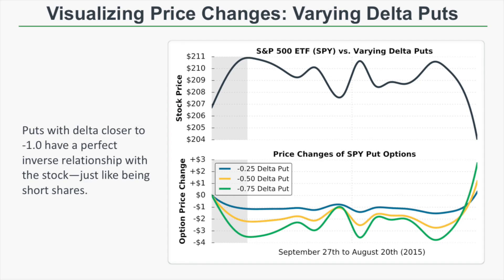Now let's look at the same time period with varying Delta put options — with initial Delta values of negative 0.75, negative 0.50, and negative 0.25. All of these puts have an inverse relationship with the stock price because they have negative deltas. The negative 0.75 Delta put is the most sensitive to changes in the stock price, while the negative 0.25 Delta put has the least sensitive price changes relative to stock movements.